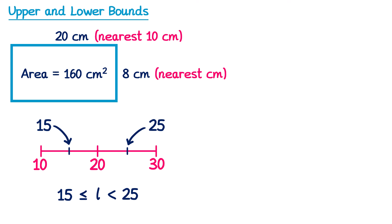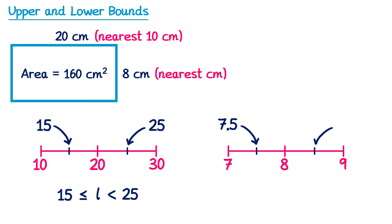Now if we do the same thing for the width — 8cm — we put 8 in the middle. This one's been rounded to the nearest centimetre, so 1cm below is 7 and 1cm above is 9. Halfway in between these will form our error interval: halfway between 7 and 8 is 7.5, and between 8 and 9 is 8.5. So the error interval for the width is 7.5 ≤ width < 8.5.